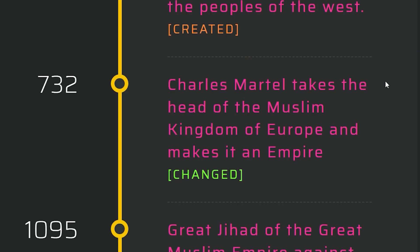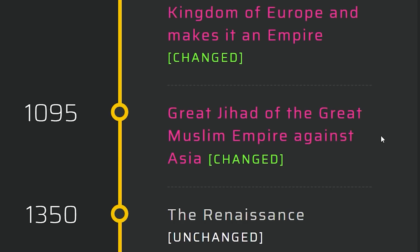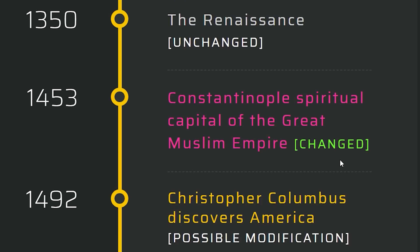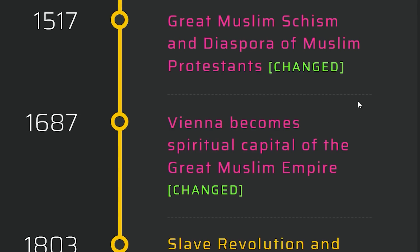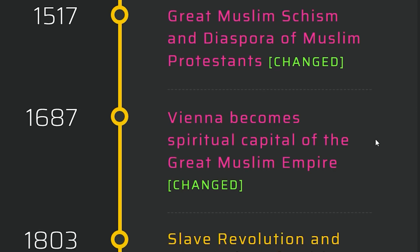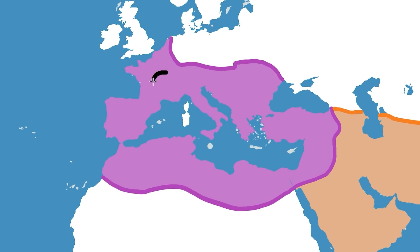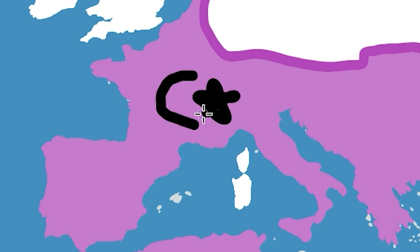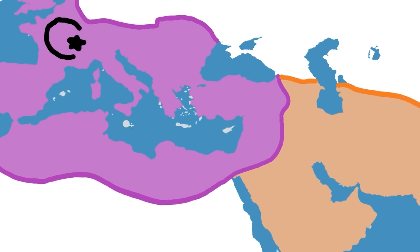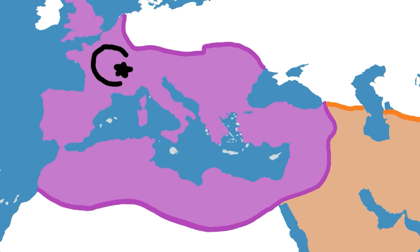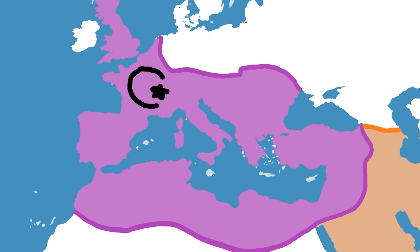Charles Martel takes the head of the Muslim kingdom of Europe and makes it an empire. Great jihad of the great Muslim empire against Asia. Constantinople becomes the spiritual capital. There are Muslim Protestants now. Vienna becomes the spiritual capital of the great Muslim empire. So basically Europe reunified under Islam only a few centuries later.